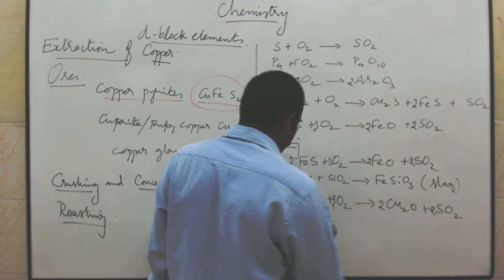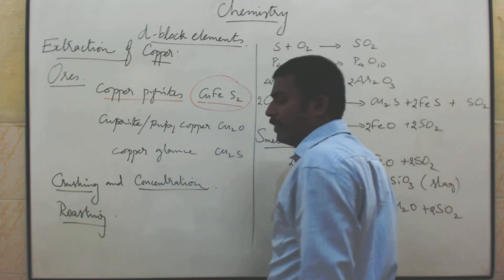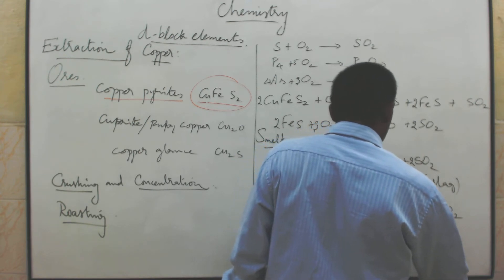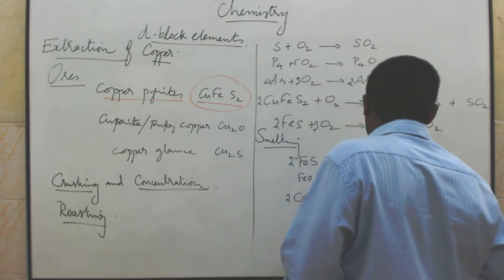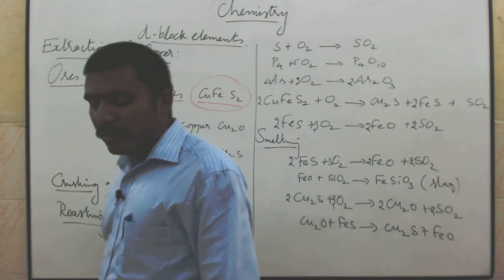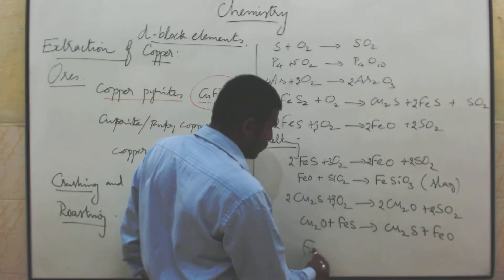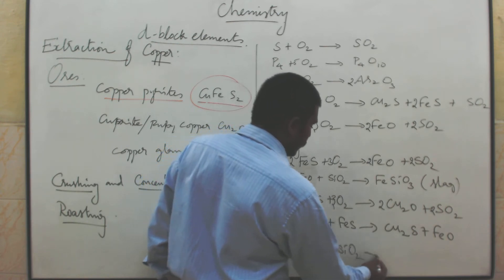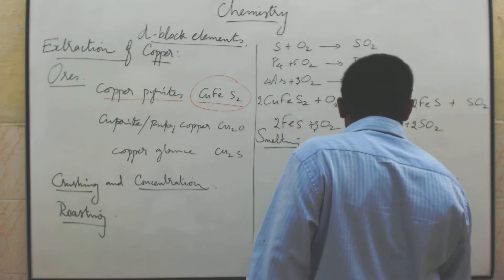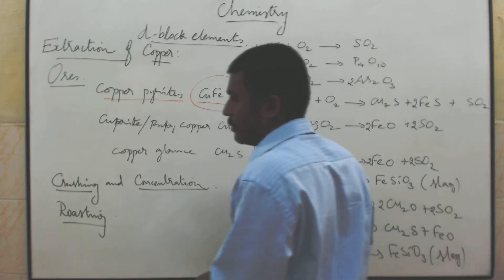Now Cu₂O reacts with iron sulphide (FeS). What will happen? It becomes Cu₂S and FeO. Copper oxide reacts with ferrous sulphide to give Cu₂S and FeO. Again, this FeO reacts with silica (SiO₂) to give the fusible slag FeSiO₃.